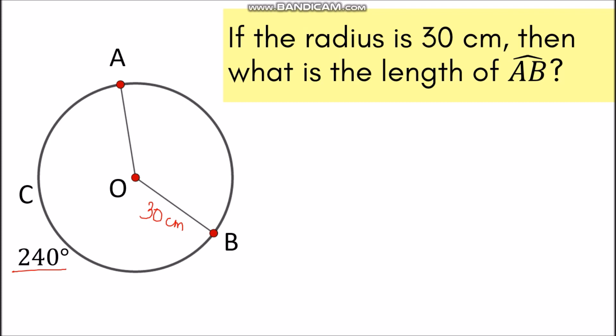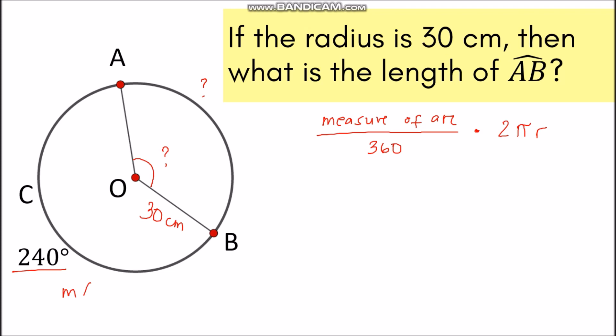We need to find the length of arc AB. Using the formula — measure of arc AB over 360, multiplied by the circumference 2πr — we don't know the measurement of arc AB and we don't know the measure of the central angle AOB. So we cannot directly apply the central angle intercepted arc postulate, but since we have the measurement of arc ACB, we can still solve for the measurement of arc AB.